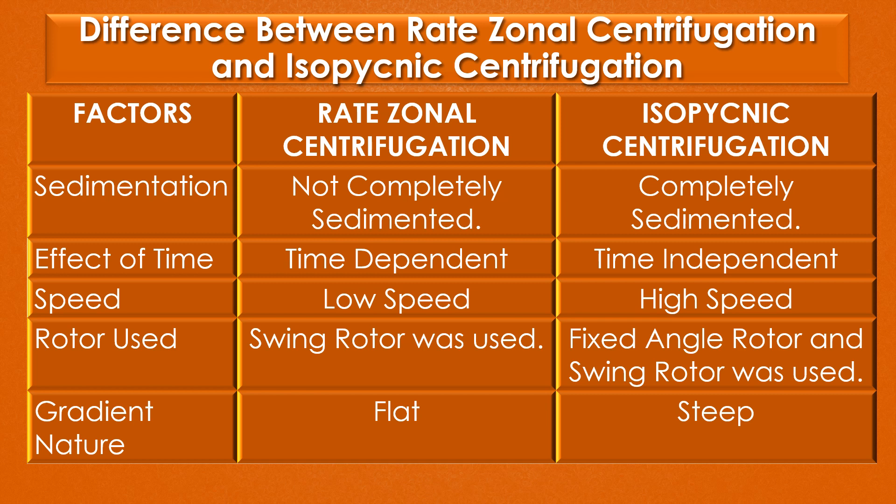Regarding speed, rate zonal centrifugation uses low speed, but isopycnic centrifugation uses high speed. In rate zonal centrifugation, a swing rotor is used, and in isopycnic centrifugation, a fixed angle rotor and swing rotor are used.